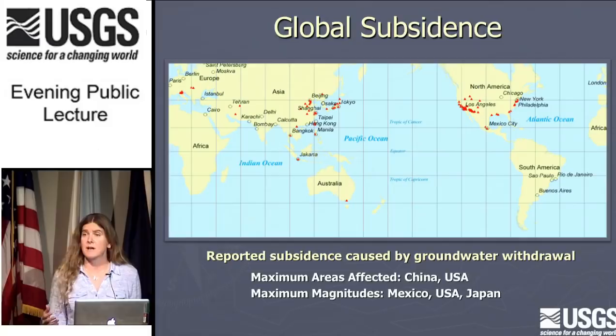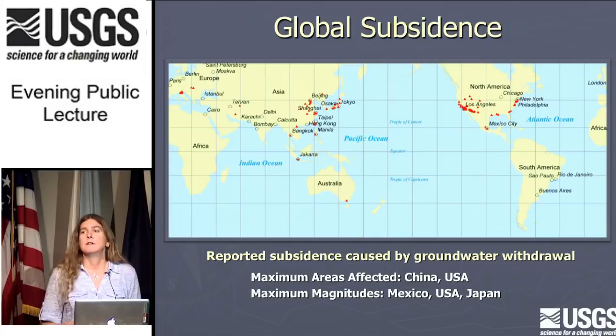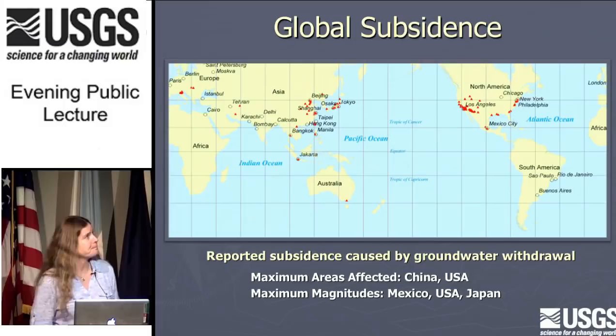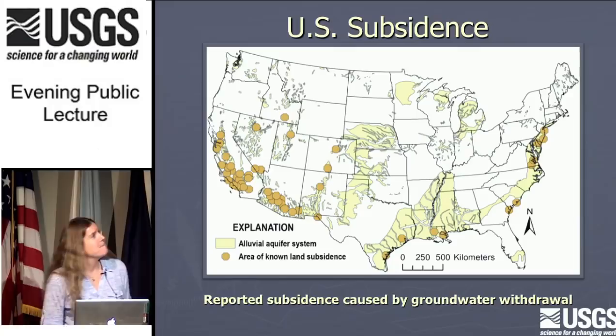Some of the places in the world subsiding at the fastest rates recently: Tehran, Iran, is subsiding very, very quickly. But just a few years ago, when we were really in the third, fourth, fifth year of our drought, the fastest subsidence rates were happening in the San Joaquin Valley worldwide. Luckily, we've had a couple of reasonably good precipitation years, so the situation has changed a little bit for us. We're not leading the race anymore, which is good. This is a race you don't want to win.